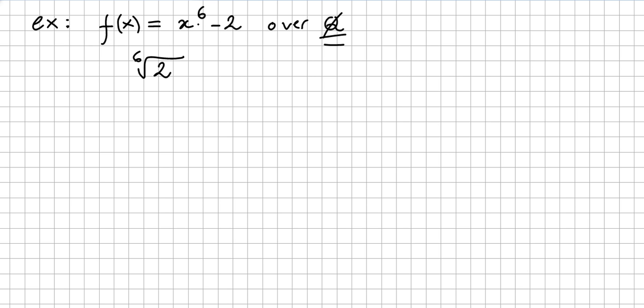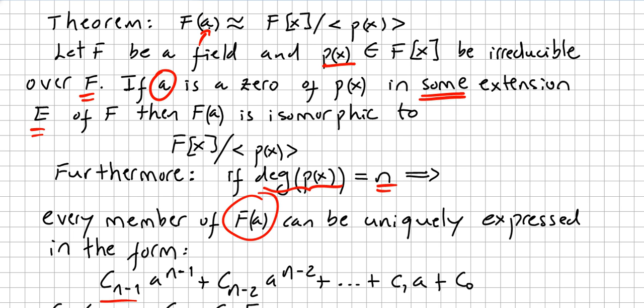F of the 6th root of 2 will be zero. So if we use the previous theorem, we just saw that F(a) is isomorphic to this division ring of polynomials.